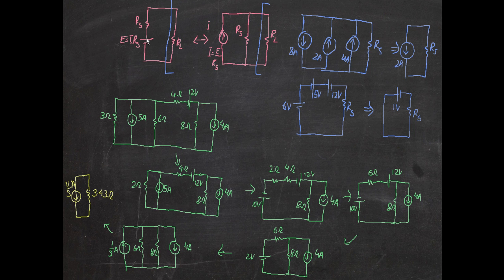When the voltage source is oriented this way, the current flows from here to here — that is, the current flows in this direction. That's why the current source arrow points upward. RL is just an arbitrary resistor; you don't need to worry about it. Whenever there is one resistor and one source in this format, you can convert from one format to the other and vice versa.